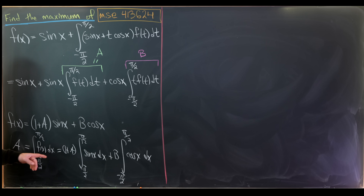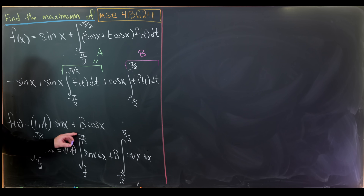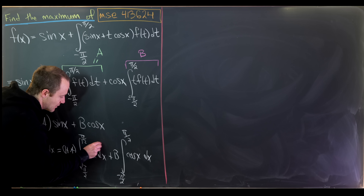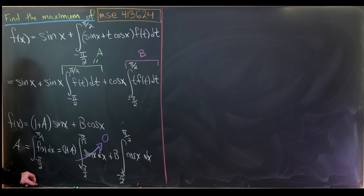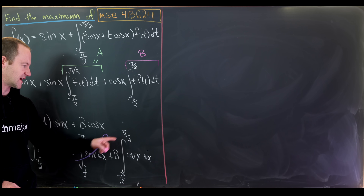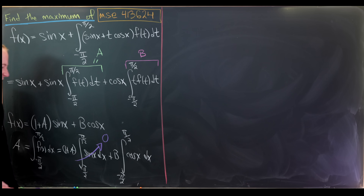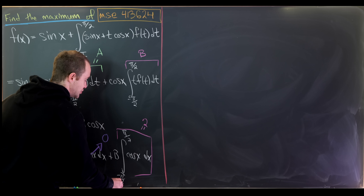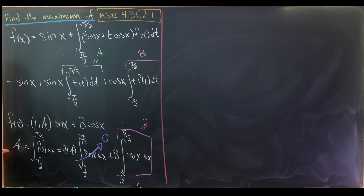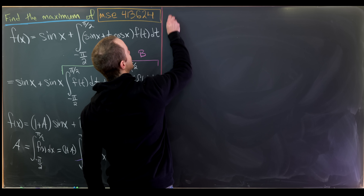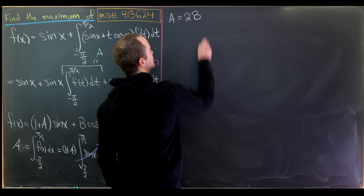If we take the antiderivative of sine, we get negative cosine. Evaluating negative cosine at pi over 2 and negative pi over 2 gives us 0, so that integral is just 0. For cosine, integrating to sine and evaluating at pi over 2 and minus pi over 2 gives us 2. So we get the nice equation A equals 2 times B.